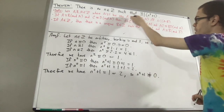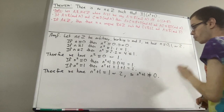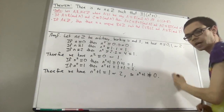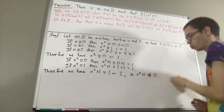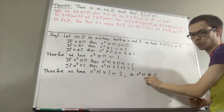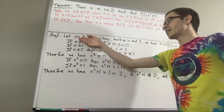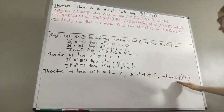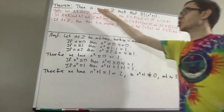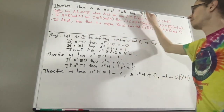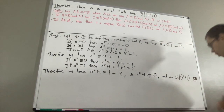By definition of congruence mod n, that tells us 3 does not divide n squared plus 1 minus 0, or in other words, 3 does not divide n squared plus 1. And so this shows if n is an arbitrary integer, then 3 does not divide n squared plus 1. In other words, we've proven that there is no integer n such that 3 divides n squared plus 1, and this completes the proof.